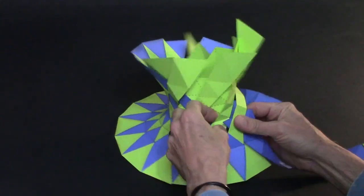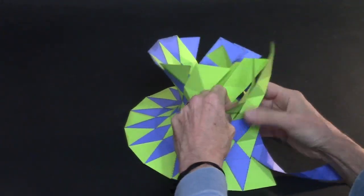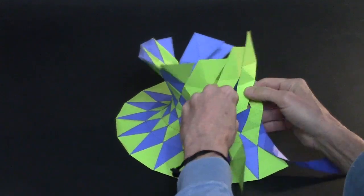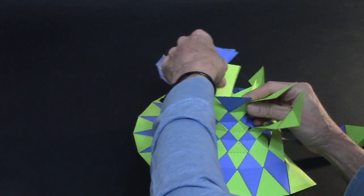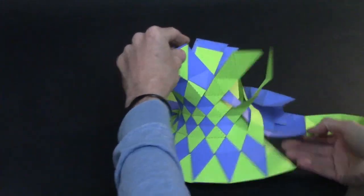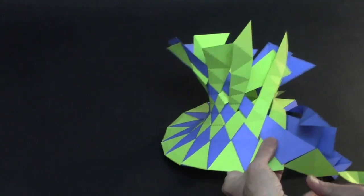Then interleave the strips with the standard over and under weave. Some clear tape of the ends will help hold everything together. As you're working, it will want to self-disassemble, but be patient.